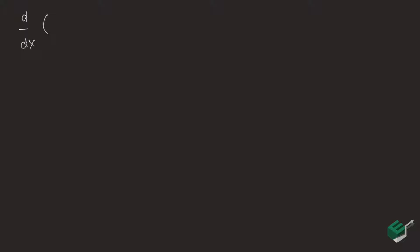The chain rule states that the derivative of f as a function of g of x is equal to the derivative of f as a function of g of x, times the derivative of g of x. Note that the function g of x should be differentiable at x, and that f is differentiable at g of x.